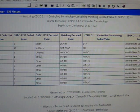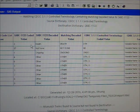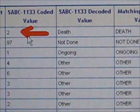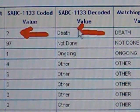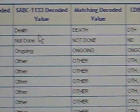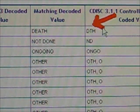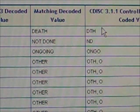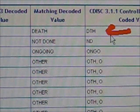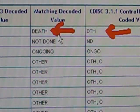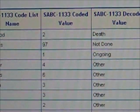Let me drill down into that. The original study has numeric values — they may have coded the value of number 2 for death. The word 'death' for the decoded value does match CDISC, which also has 'death'. However, CDISC's coded terminology is a word. It's common in ADaM to have a numeric value, but in SDTM the coded term is normally a character. 'DTH' is the abbreviated coded term for death in CDISC, but in the study we used the numeric value 2.